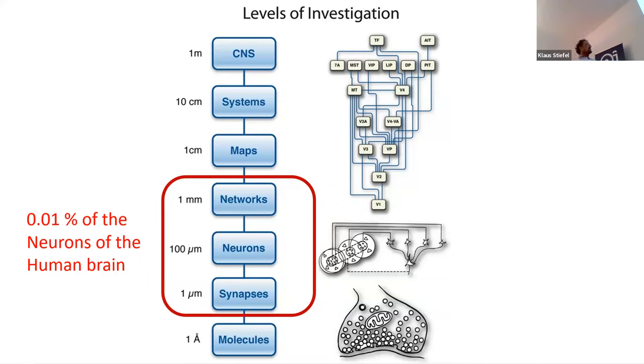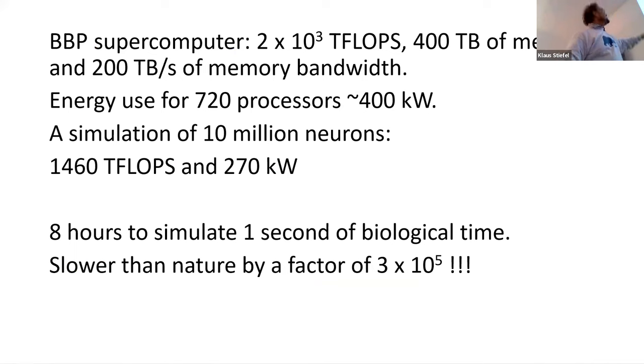So, 10 million neurons is 0.01 percent of the neurons of the human brain, right? And then, the question is how much energy did that take? And so basically the Blue Brain, I know it's not very didactic to have, you know, a slide with a lot of text. It says unavoidable, unavoidable.